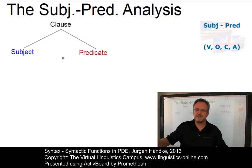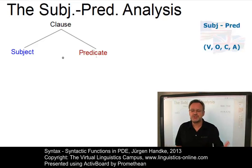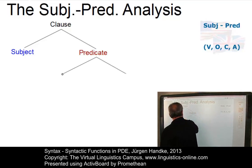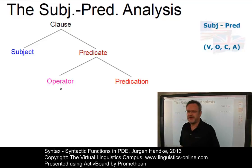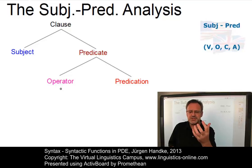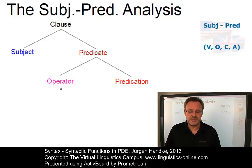The subject is often defined as the constituent specifying the topic of the sentence, whereas the predicate is that which is asserted about the subject. The predicate itself can be subdivided into an operator and a predication, where the operator is, in present-day English at least, normally an auxiliary verb. By reversing the sequence of subject and operator, declarative sentences can be turned into interrogative sentences.